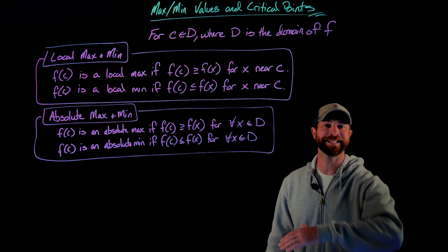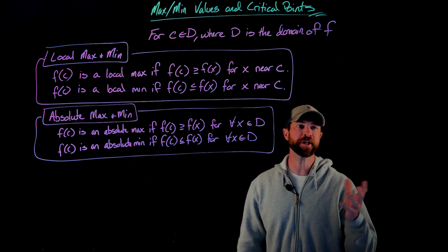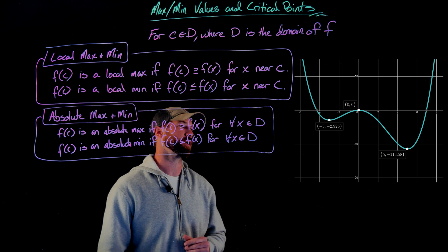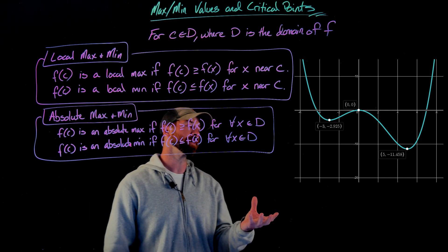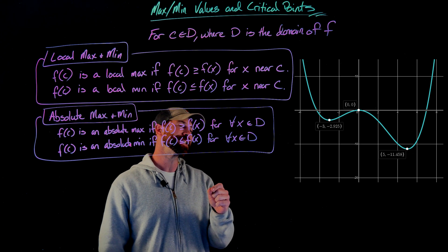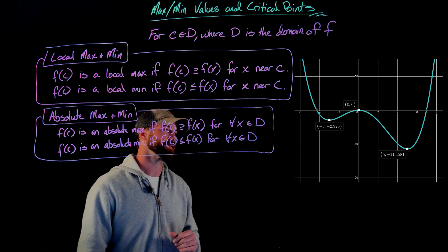All right, before we move forward and get into the calculus with this stuff, let's look at a graphical representation, remind us what local min, local maxes, and absolute min and maxes are all about. We have a fourth degree polynomial here, and what you'll see is I've labeled these points at x equals negative 3, x equals 0, and x equals 5.